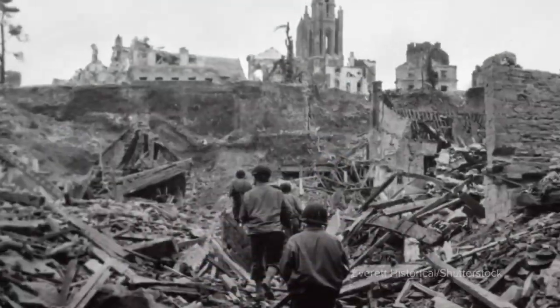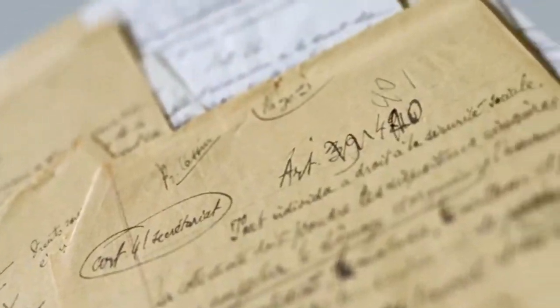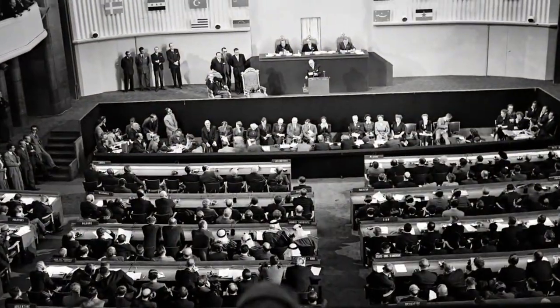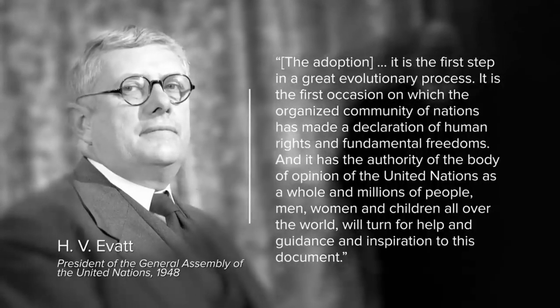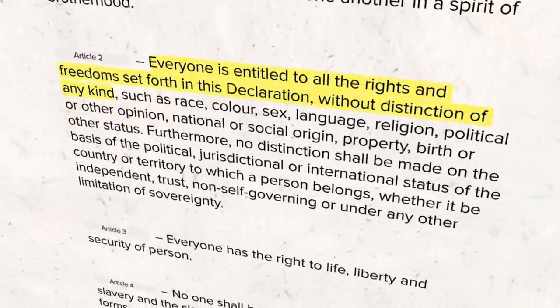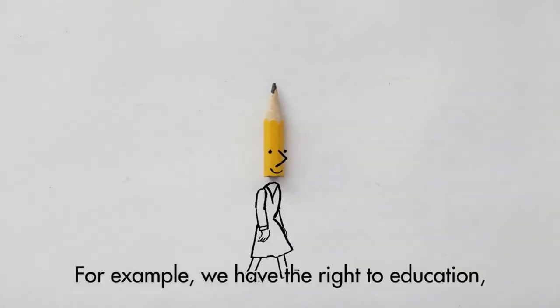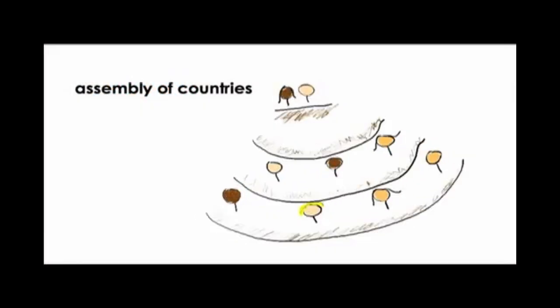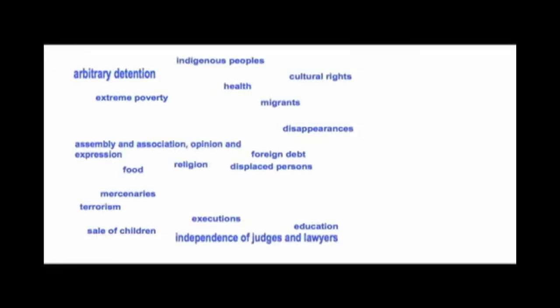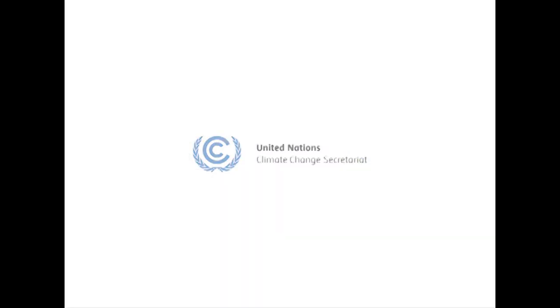In the area of human rights, the Universal Declaration of Human Rights (UDHR) was adopted by the United Nations General Assembly in 1948. The UDHR set out a common standard of human rights that should be universally respected, and has since been incorporated into many national and regional legal systems. Since then, a number of international human rights treaties and mechanisms have been established, including the International Covenant on Civil and Political Rights, the Convention Against Torture and Other Cruel, Inhuman or Degrading Treatment or Punishment, and the Human Rights Council.